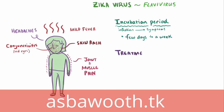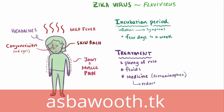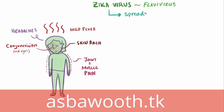Treatment usually just involves treating the symptoms — things like getting plenty of rest, drinking fluids to prevent dehydration, and taking medicine like acetaminophen to help reduce pain and fever. We've covered the spreads quickly part, which really matters most in places with a lot of mosquitoes. But what about the causes serious harm part?